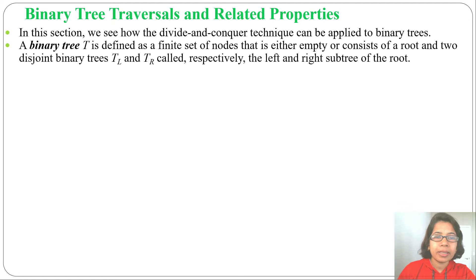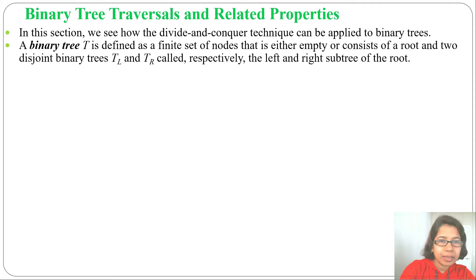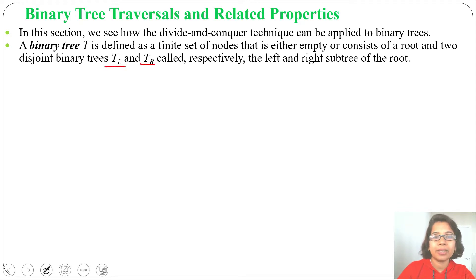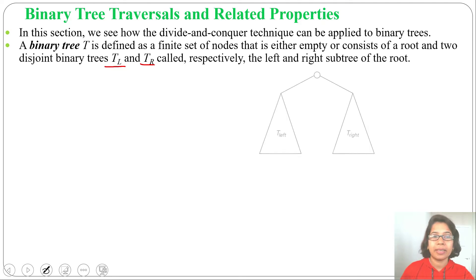A binary tree is defined as a finite set of nodes that is either empty or consists of a root and two distinct binary trees: TL for the left subtree and TR for the right subtree. So a binary tree is a combination of a root and two distinct binary trees — its left subtree and its right subtree.